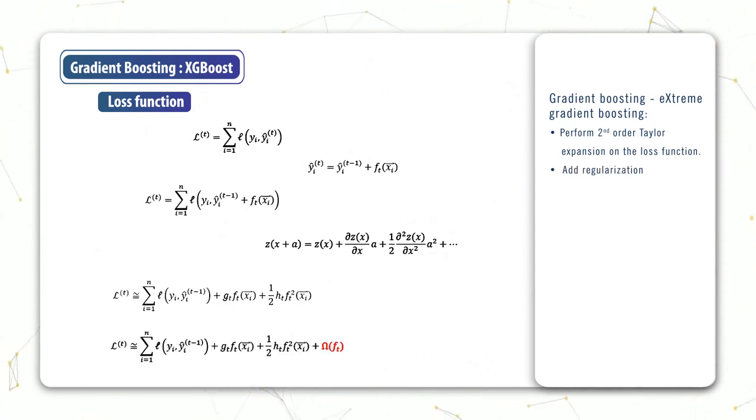And then finally, we can add this regularization term to the loss function, which we call omega. Now this form of the loss function leads us on to what's called extreme gradient boosting, or XGBoost.